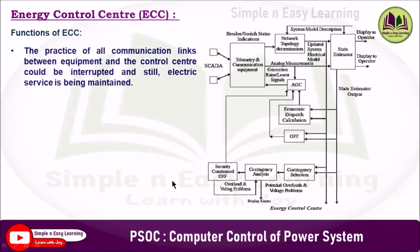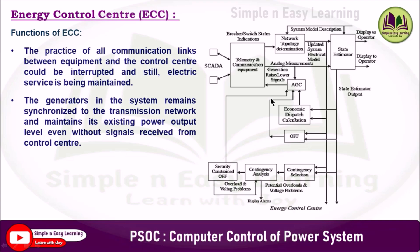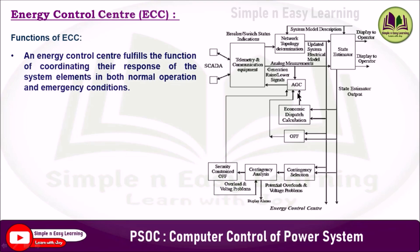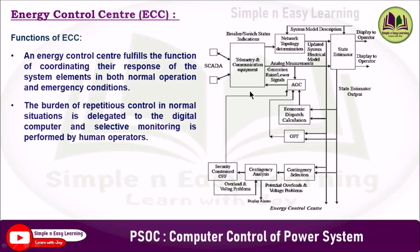Even if all communication links between the equipment and the control center are interrupted, electric service is still maintained. The generator in the system remains synchronized to the transmission network and maintains its existing power output level even without signals received from the control center. An energy control center fulfills the functions of coordinating the response of system elements in both normal operation and emergency conditions. The burden of repetitive control in normal situations is delegated to the digital computer, and selective monitoring is performed by human operators.